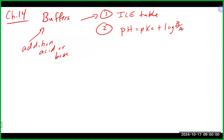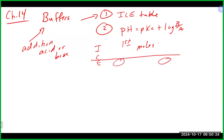We can do the ICE table in moles. So in a buffer situation where you're adding either acid or base to your buffer — and as we will see shortly in a titration situation where you're constantly adding volume — we want to do that first ICE table in moles. The idea of the first ICE table in the case of the buffer is to figure out how your buffer changes as a result of adding acid or base. As we'll talk about with titrations, it's how your titration is changing in terms of pH as you continue to add stuff.